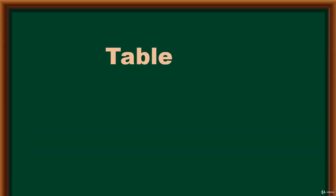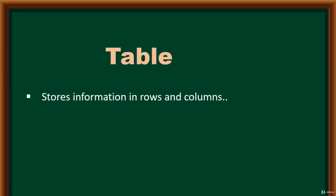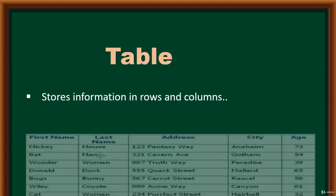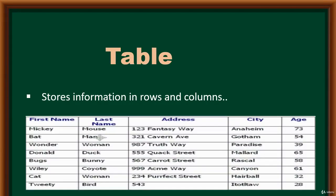A database stores information in a table. What is a table? A table stores information in rows and columns, just like an Excel spreadsheet. The rows are horizontal and represent unique records. The columns or fields are vertical — for example: age, city, address, last name, and first name are all columns or fields.